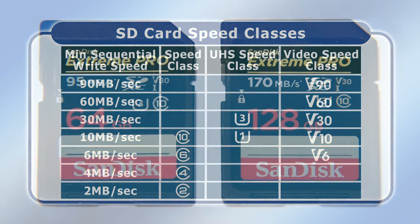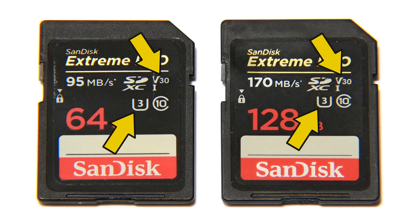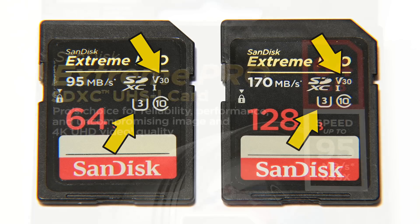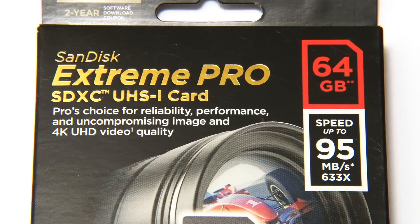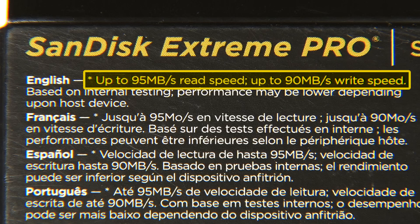It's also worth noting that manufacturers often label their cards with a claimed speed. Here for example are two SanDisk Extreme Pro cards with labelled speeds of 95 and 170 MB per second, but both cards are only classified as U3 and V30 indicating a minimum write speed of 30 MB per second. It is only when we look to the box that we can see the 95 MB per second is a potential maximum read rather than write speed.